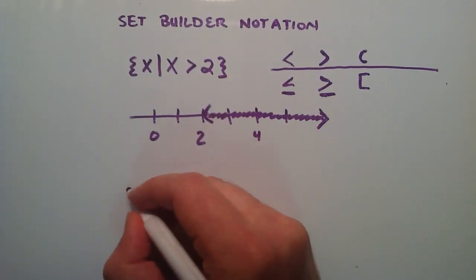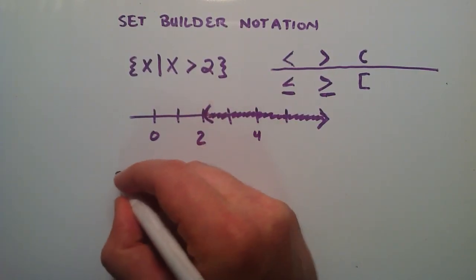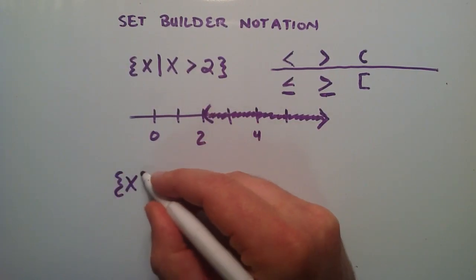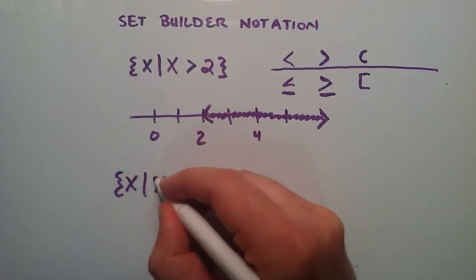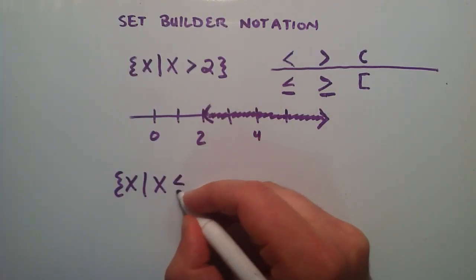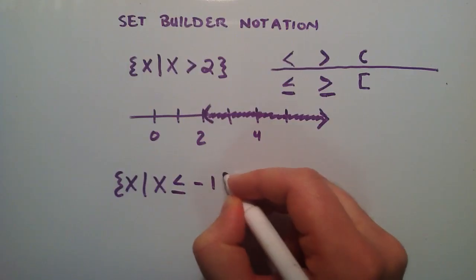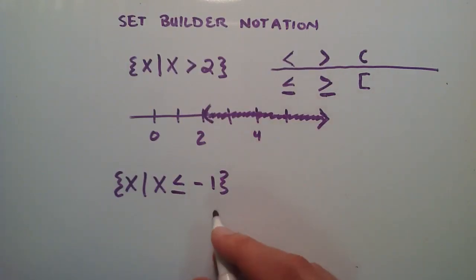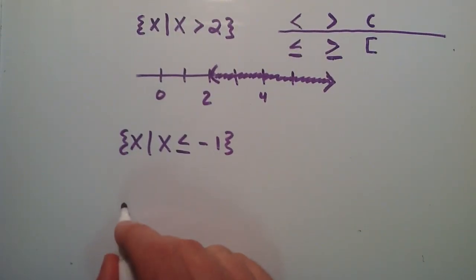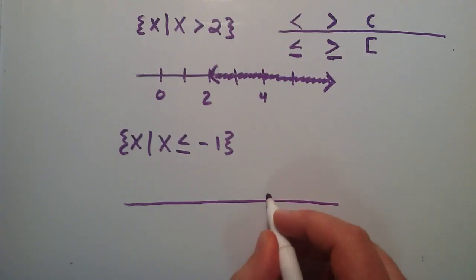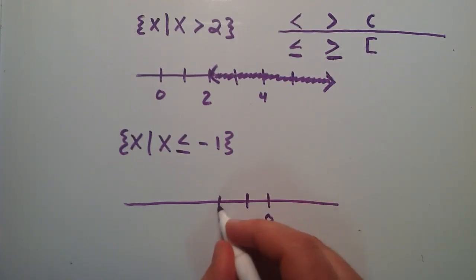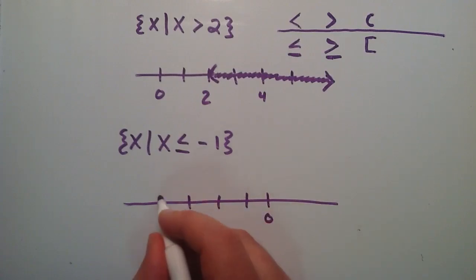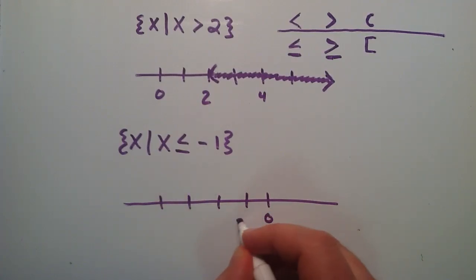So what about this set over here? Let's draw another set here. So we've got x, our vertical line, another x, and then we'll do less than or equal to the value negative 1. So let's draw that on a number line here. In this case, I'm going to put my 0 over here, and this will be negative 1, negative 2, negative 3, negative 4. So we'll just put our negative 1 here.